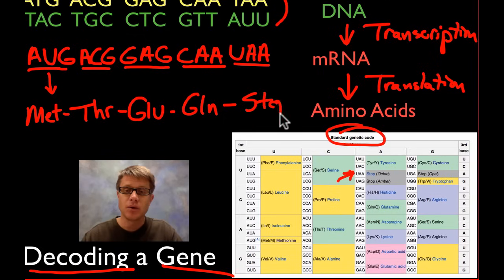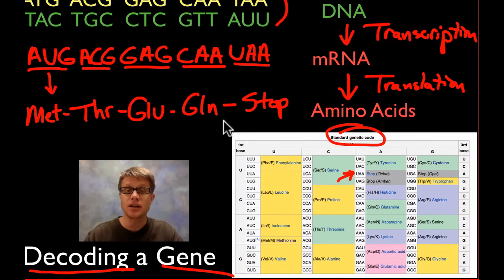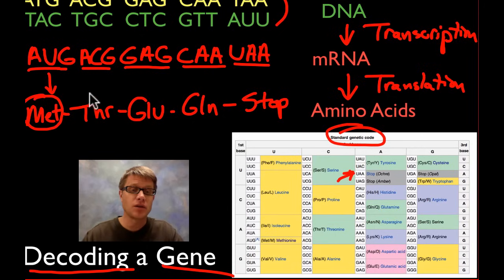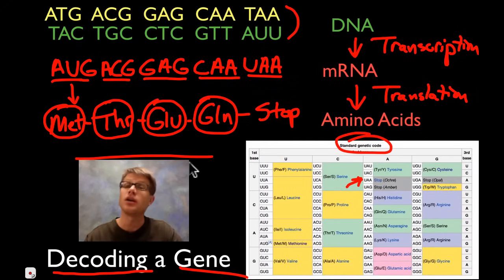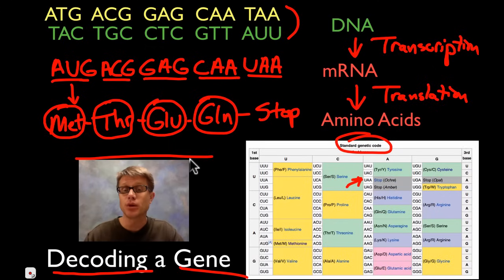So that's not going to actually code for an amino acid. It will actually put in a release factor so the whole thing can break out. And so this is going to be our first amino acid, our second amino acid, our third amino acid, our fourth amino acid. This whole thing then is called a polypeptide. And again it would fold into a specific protein to do a specific job.